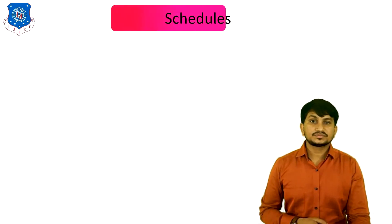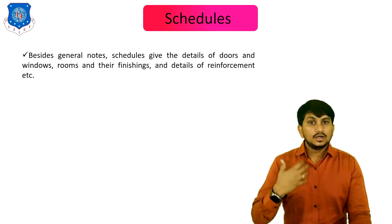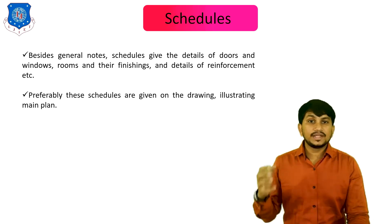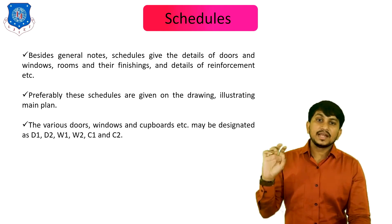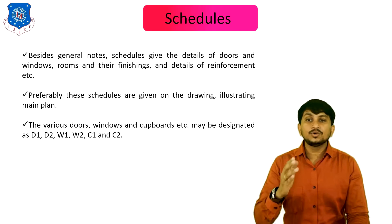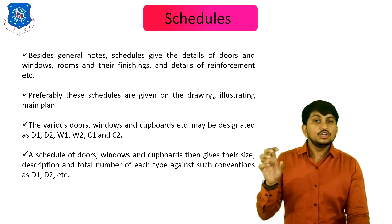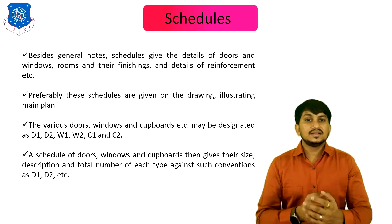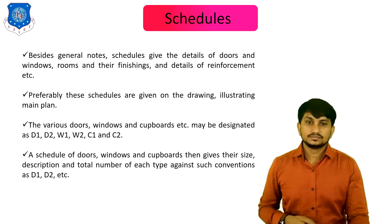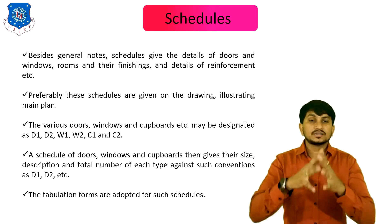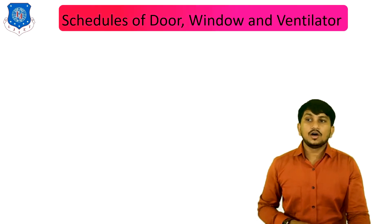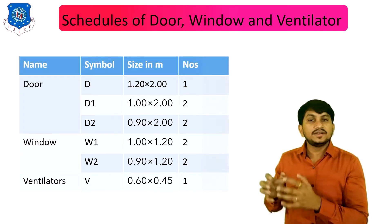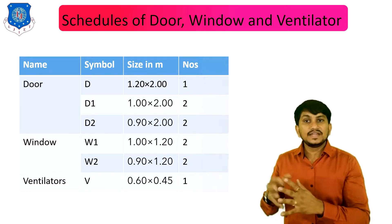The third detail is the schedule. In schedules, we provide details of doors, windows, rooms, finishings, and reinforcements. These schedules are given on the drawing illustrating the main plan. The various doors, windows, and cupboards may be designated as D1, D2, W1, W2, C1, C2, etc. A schedule of doors, windows, and cupboards gives their sizes, description, and total number of each type against conventions such as D1, D2, etc.